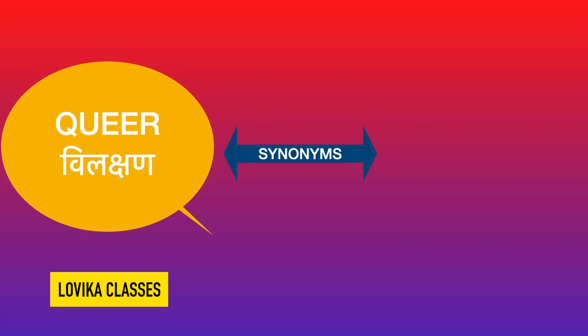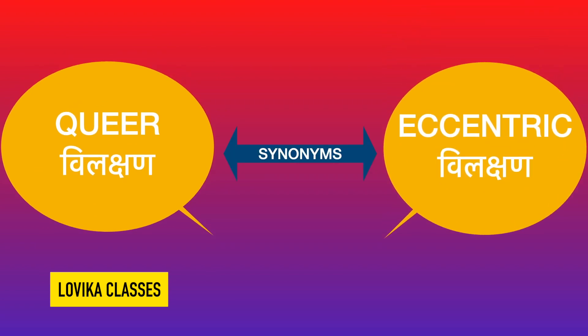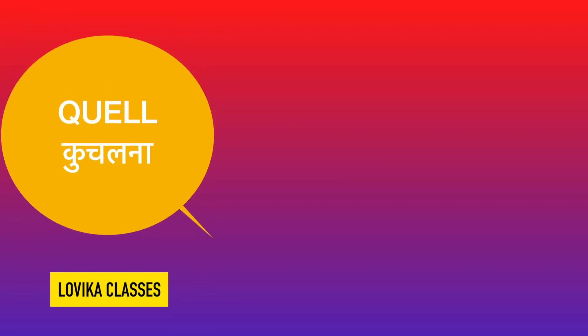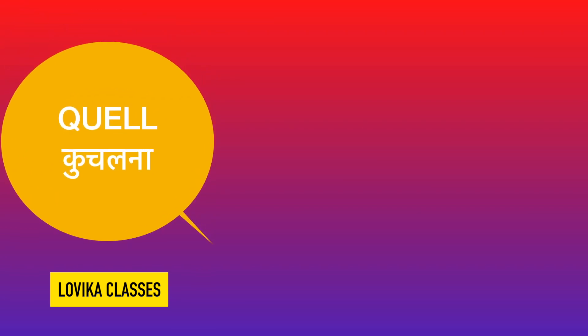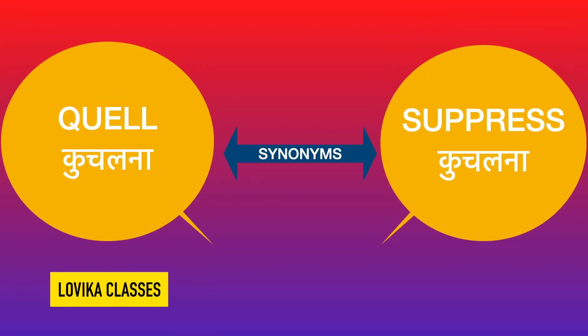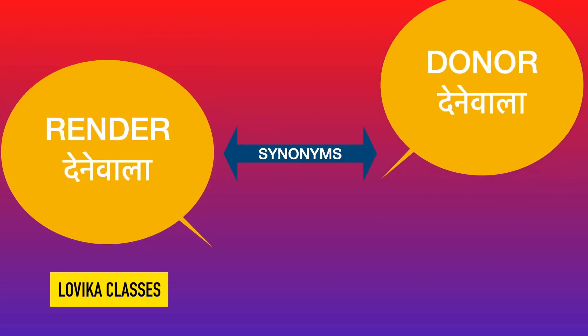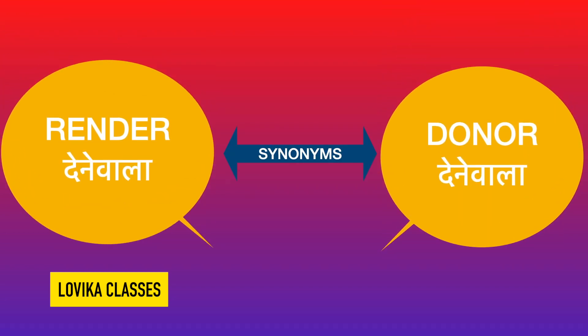Queer means vilakshan — its synonym is eccentric, also meaning vilakshan. Quell means kuchalna — its synonym is suppress. Render means dene wala — its synonym is donor.